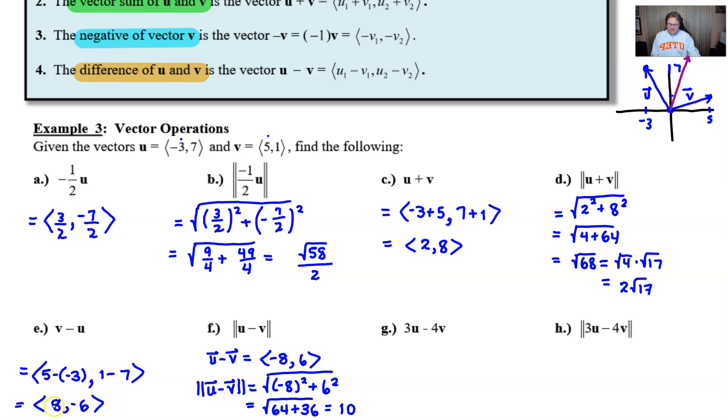Now maybe you've already caught this. Had we taken the magnitude of our answer from e, do you see that we would get the same answer? The 64 plus the 36. It's just interesting that the negatives are opposite of what they would have been here. And yes, this vector v minus u does have a magnitude of 10. Think about it. Vector v minus u and vector u minus v are the same size, they are the same length, they're just going in the opposite directions. So it seems logical that they would have the same length.